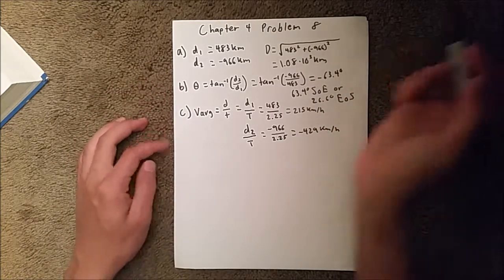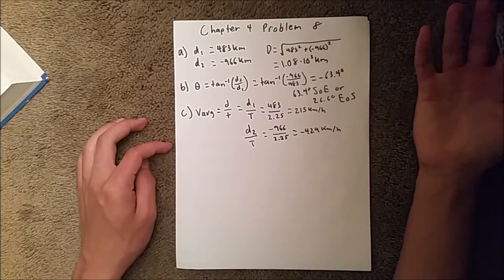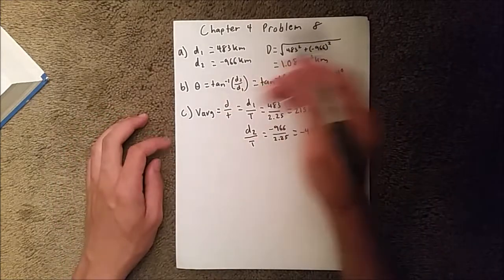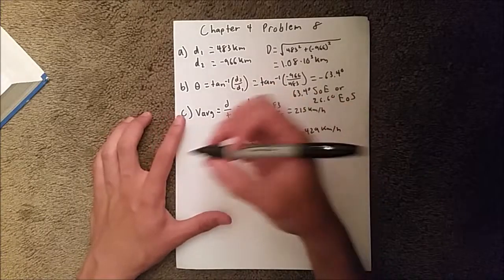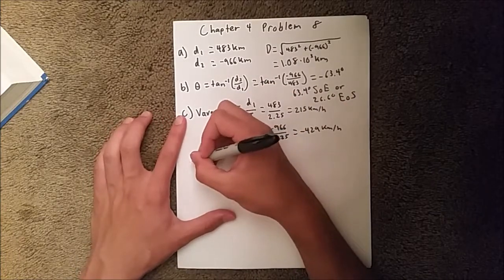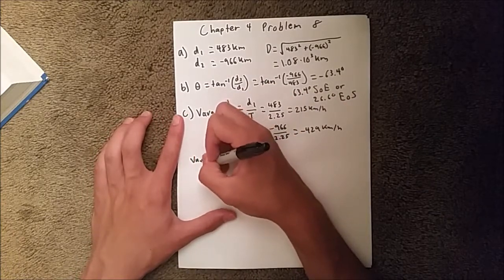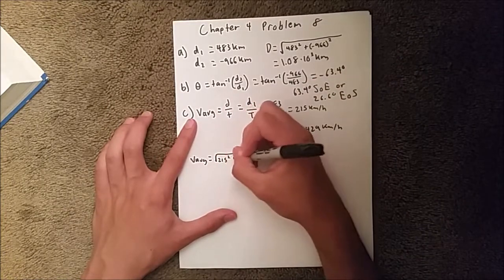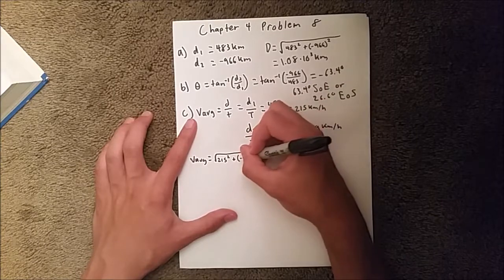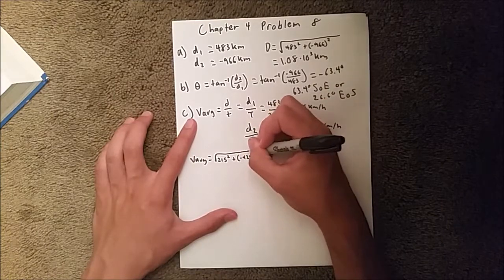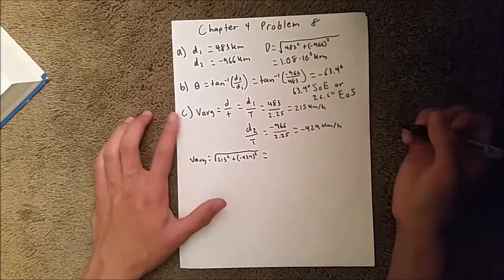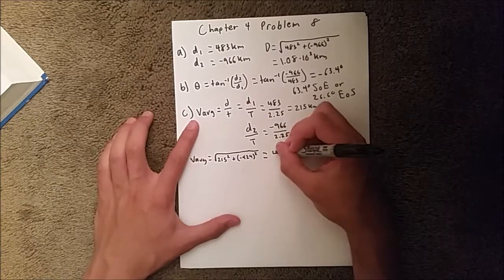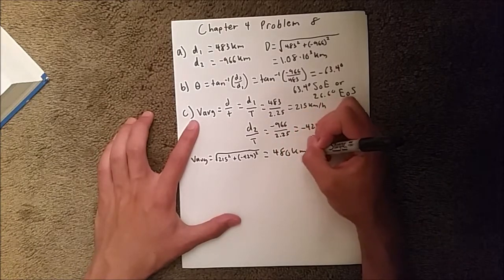So we need to use our distance formula. In this case, it's not really distance, but it's our magnitude formula. So, the average is going to be the square root of 215 squared plus negative 429 squared. And when you do that, put that in your calculator, you should get 480 kilometers per hour.